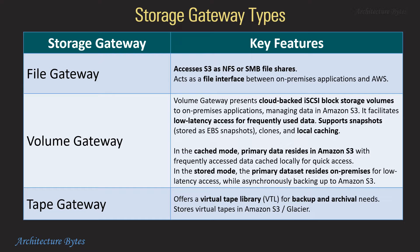Volume Gateway operates in two modes. In cached mode, primary data resides in Amazon S3 with frequently accessed data cached locally for quick access. In stored mode, the primary dataset resides on-premises for low-latency access while asynchronously backing up to Amazon S3. Tape Gateway offers a virtual tape library for backup and archival needs and stores virtual tapes in Amazon S3.